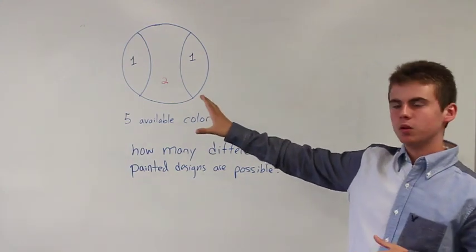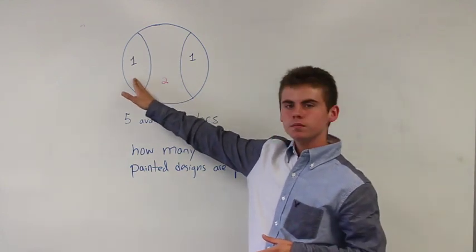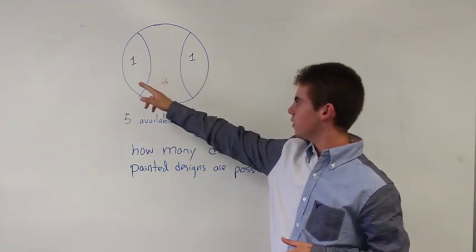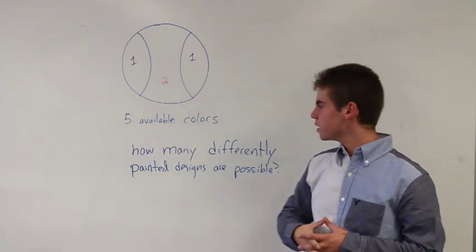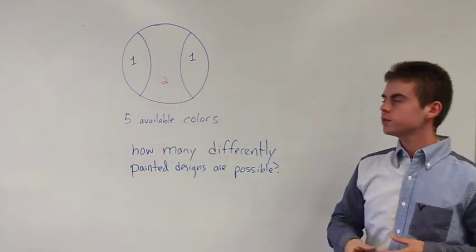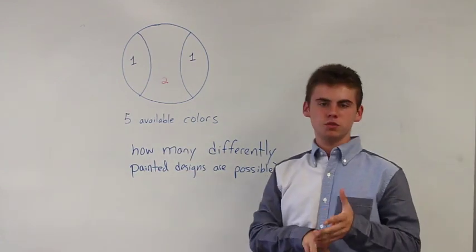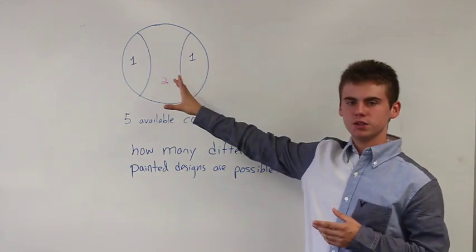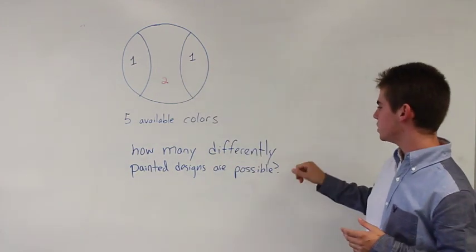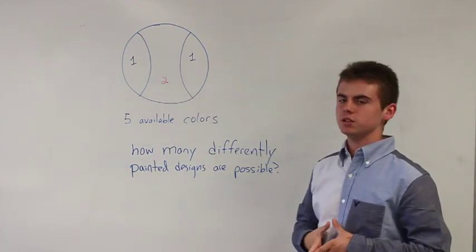In this problem we have the baseball and one region will be one color and then this region will be another color. So you have five available colors and you're going to choose two of them to make this design. The question is how many differently painted designs are possible.